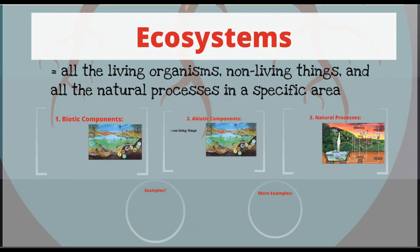So let's start with the big picture: ecosystems. Ecosystems include all the living organisms, non-living things, and all the natural processes in a specific area, and all three of those parts are very important in the definition of an ecosystem.